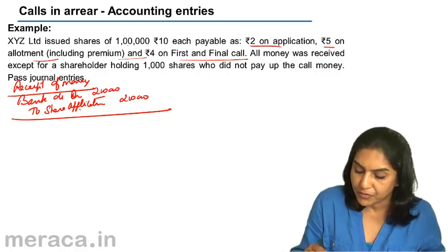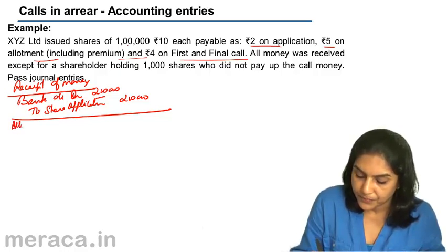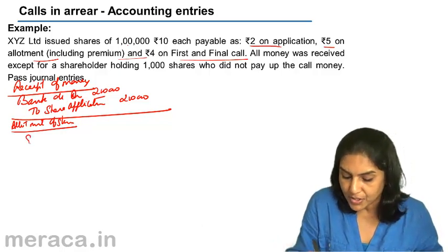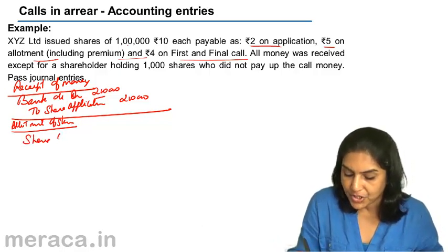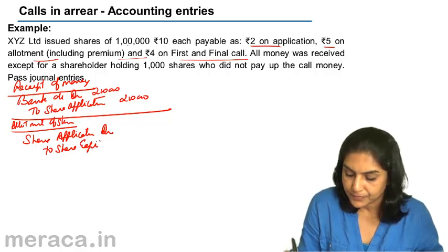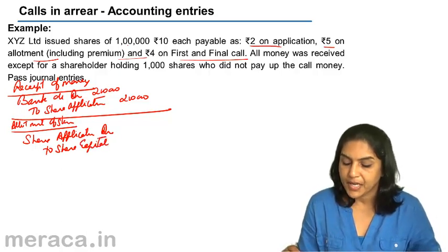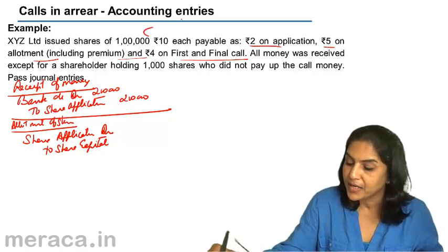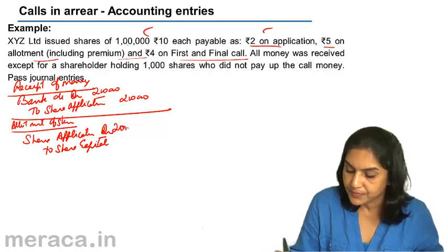On allotment of shares, the share application is capitalized: share application account debit to share capital — same amount, 1 lakh into 2 = 2 lakhs.